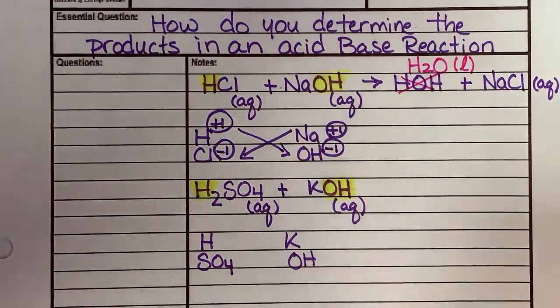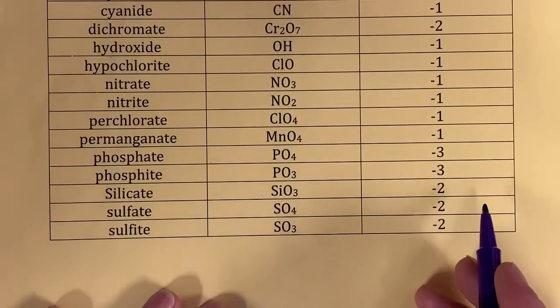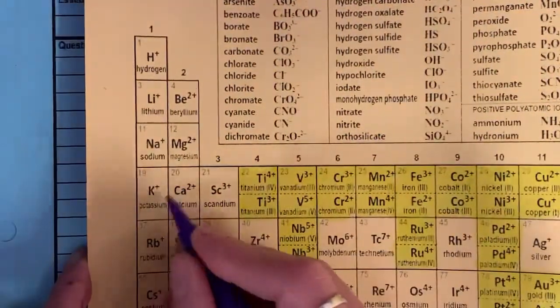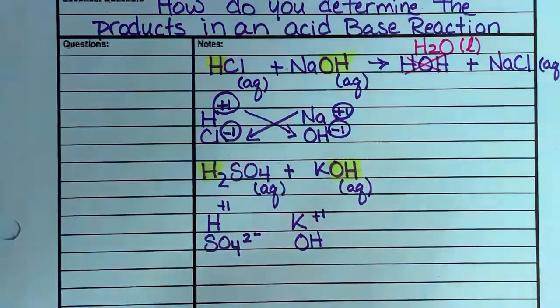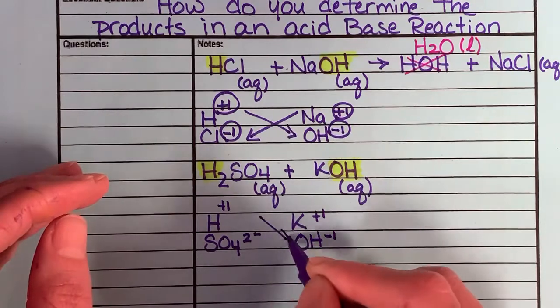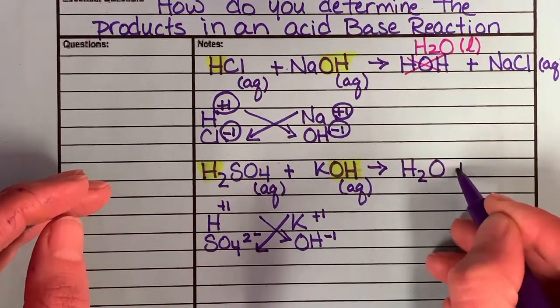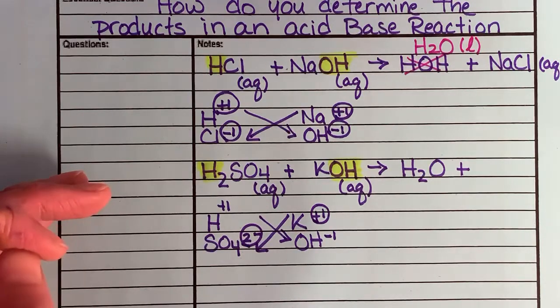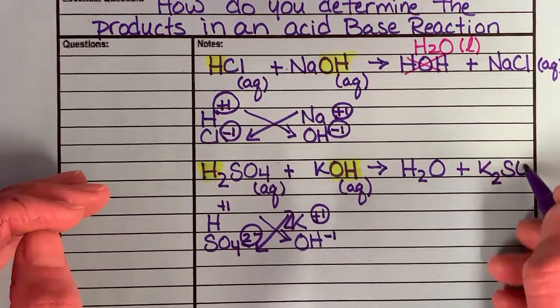We keep track of our charges. So H is a plus 1. SO4 is a minus 2. K is a plus 1. And OH is a minus 1. Just like before, they switch partners. My H and my OH are going to come together to make water. Plus 1 minus 2. I need to switch charges when they don't match. So this is going to be K2SO4.